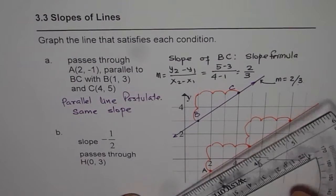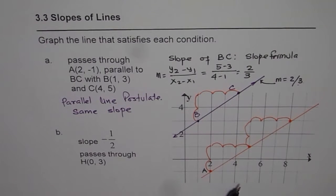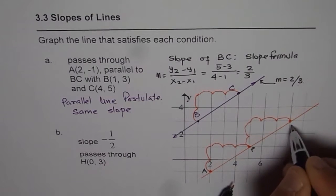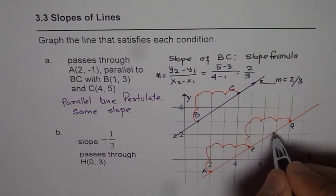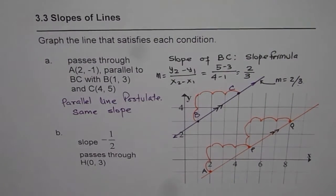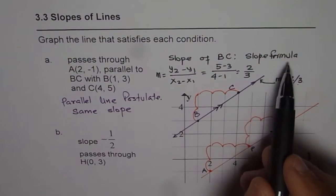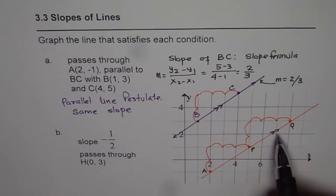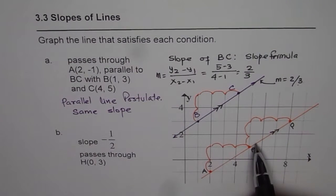This line is indeed parallel to BC. The idea is: first find the slope of BC using the slope formula, then from the parallel line postulate, the slope of this line must be exactly the same. If the slope is the same, then the lines are parallel. The line through A should have slope 2/3.